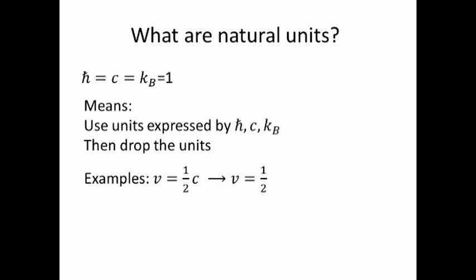For example, consider a velocity that is half of the speed of light. We just write v equals one half. Or consider an entropy that is k_B times the logarithm of two to the n. We just write s equals the logarithm of two to the n. Or consider an action that is h bar omega t. We just write omega t.